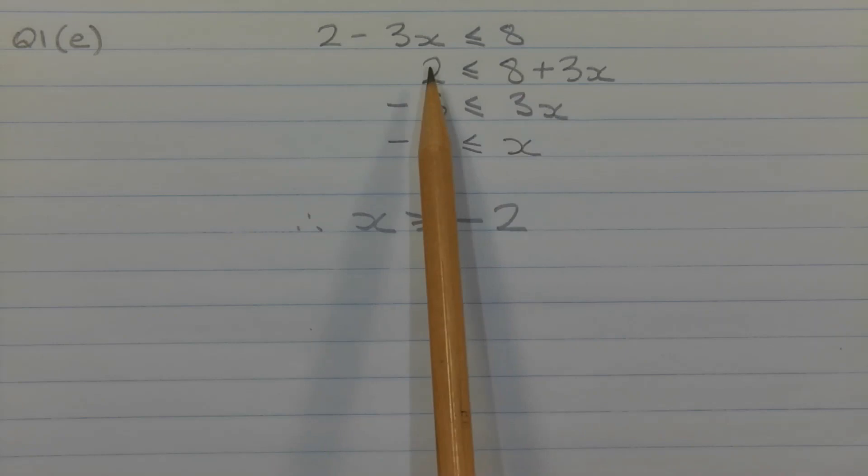Next I'm going to subtract 8 from both sides of the inequality so we get negative 6 less than or equal to 3x.